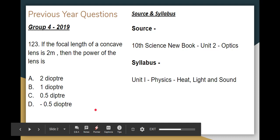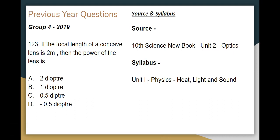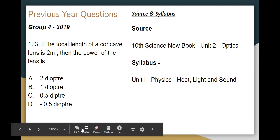We will see the telescope, microscope, and defects of the eye. The source and syllabus: 10th standard science new book, Unit 2 Optics. Syllabus: Unit 1 Physics — Heat, Light and Sound. We will cover Light.